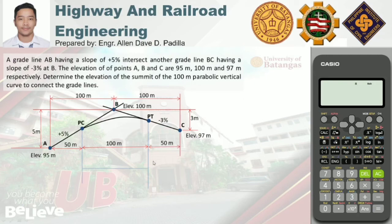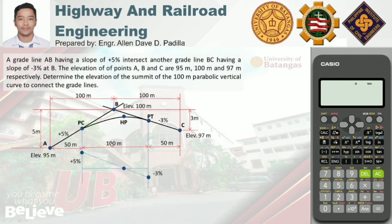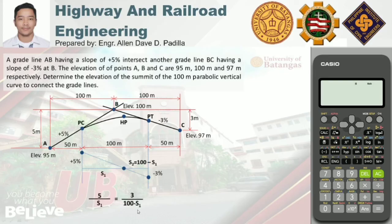Drawing the grade diagram with positive 5 percent and negative 3 percent grade lines, the point of intersection is the highest point — the summit. Let s1 be from PC and s2 = 100 minus s1 from PT. By ratio and proportion: 5 divided by s1 equals 3 divided by (100 minus s1), ignoring signs since this is a proportion. Solving, s1 equals 62.5 meters.